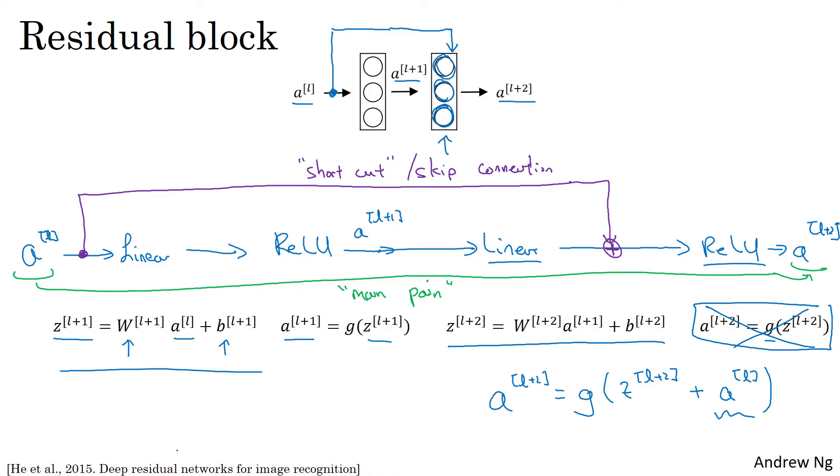So what the inventors of ResNet, so that would be Kaiming He, Xiangyu Zhang, Shaoqing Ren, and Jian Sun, what they found was that using residual blocks allows you to train much deeper neural networks. And the way you build a ResNet is by taking many of these residual blocks, blocks like these, and stacking them together to form a deep network.